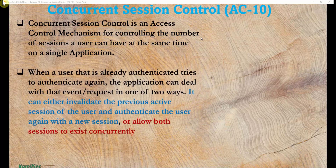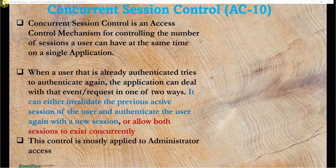When a user that is already authenticated tries to authenticate again, the application can deal with that request in one of two ways: it can either invalidate the previous active session and authenticate the user again with a new session, or allow both sessions to exist concurrently.